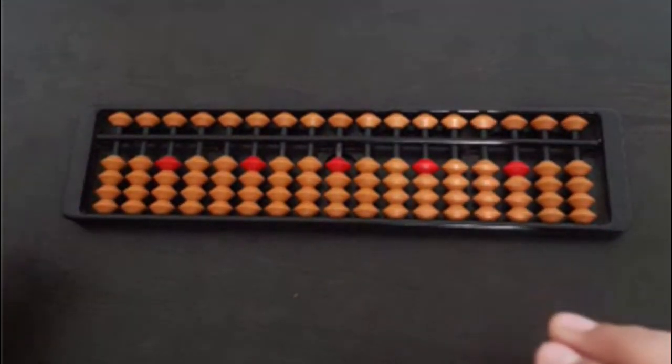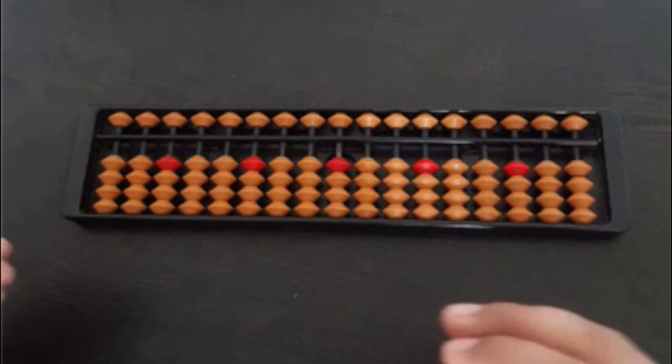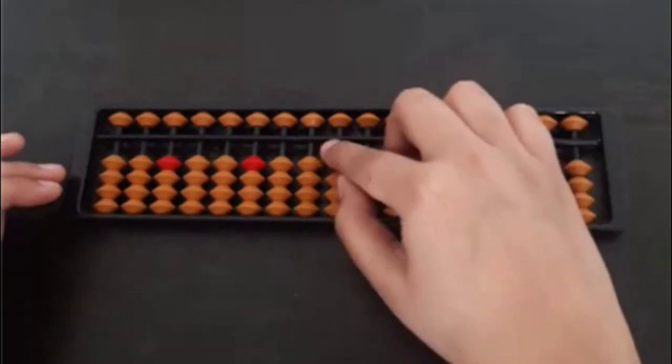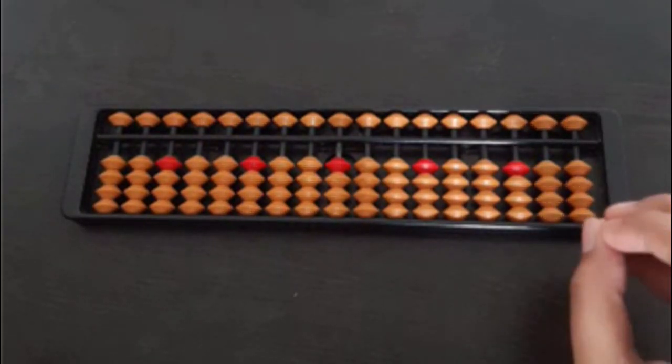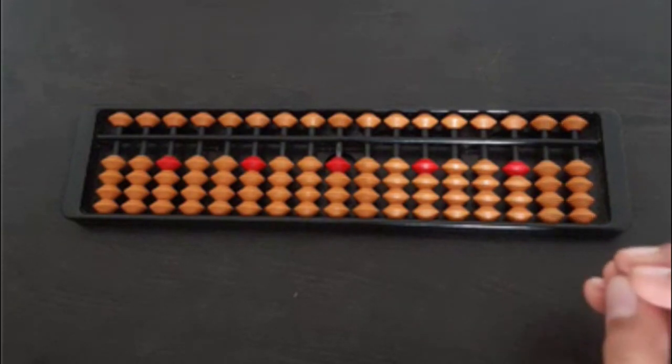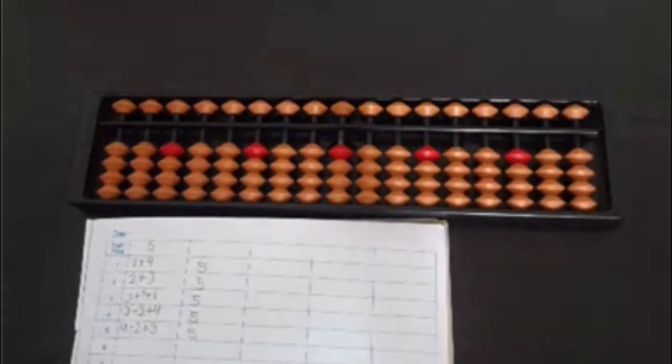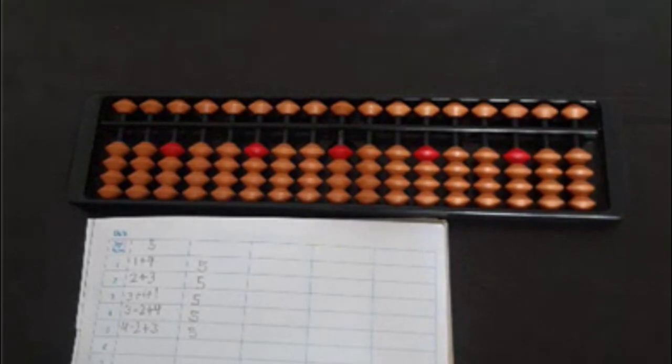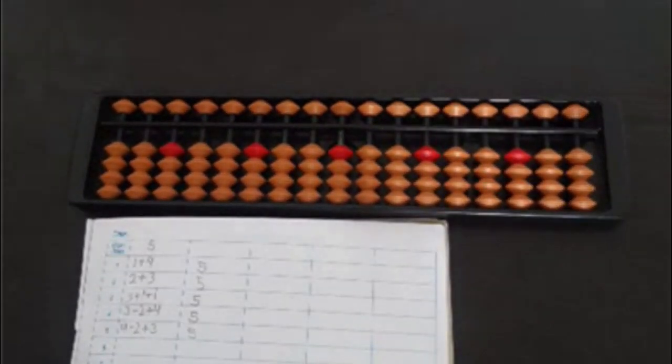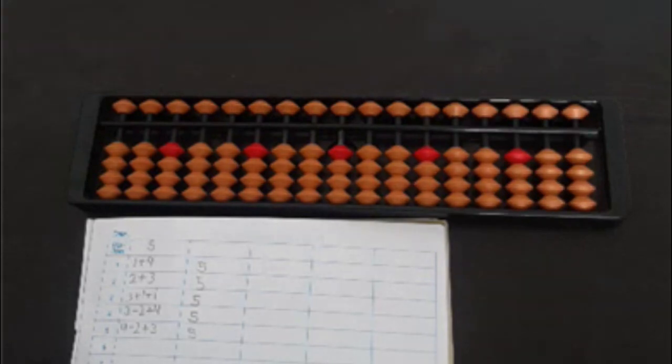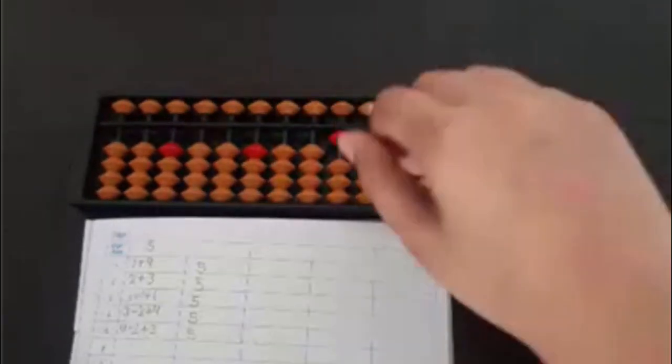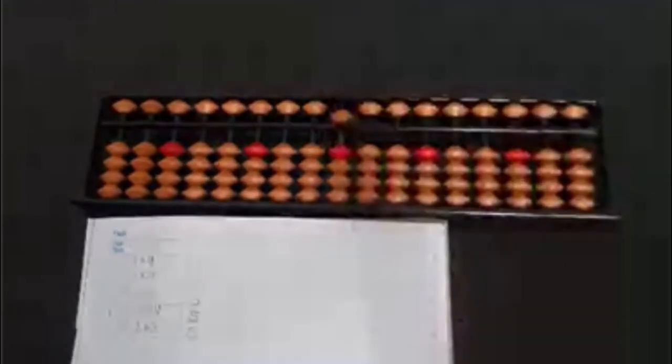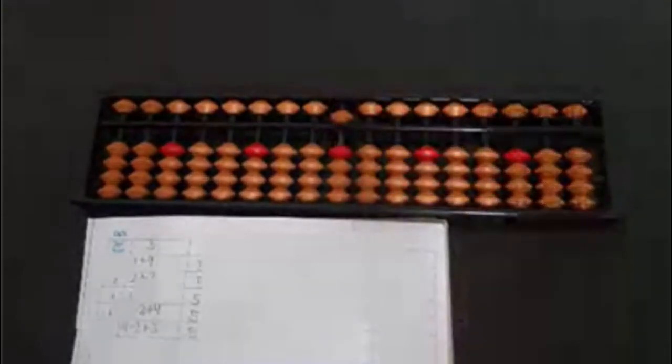So we will be just imagining it in our mind and we will not be using this instrument because most of the children don't have it. So now let's try some questions. The very first thing is we will be learning about friends. Friends are the numbers to fulfill the sum. Like for 1 it will be 4 because if we add 4 to 1 it will make 5.